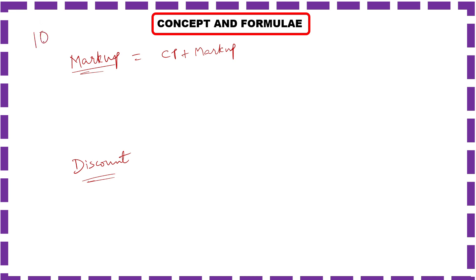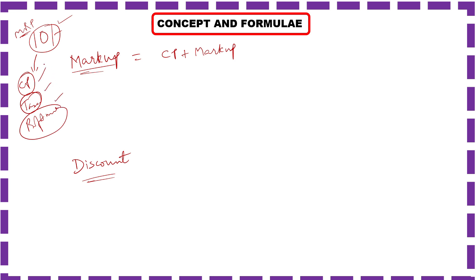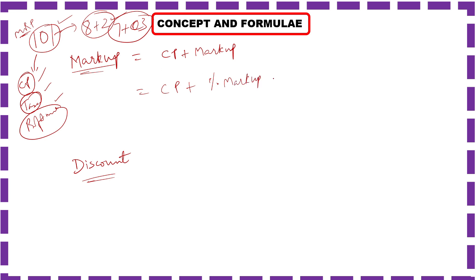For example, if the MRP of a product is 10 rupees, this 10 rupees includes the cost price, taxes, and profit margin — everything. If the cost price is 8 rupees then the markup will be 2 rupees, meaning 8 is CP plus 2 rupees markup, which is some percentage of the CP. So overall, 8 plus 2 equals 10. Now what about discount? If the shopkeeper gives you a 1 rupee discount and sells it for 9 rupees, that 1 rupee reduction from the markup price is known as the discount.